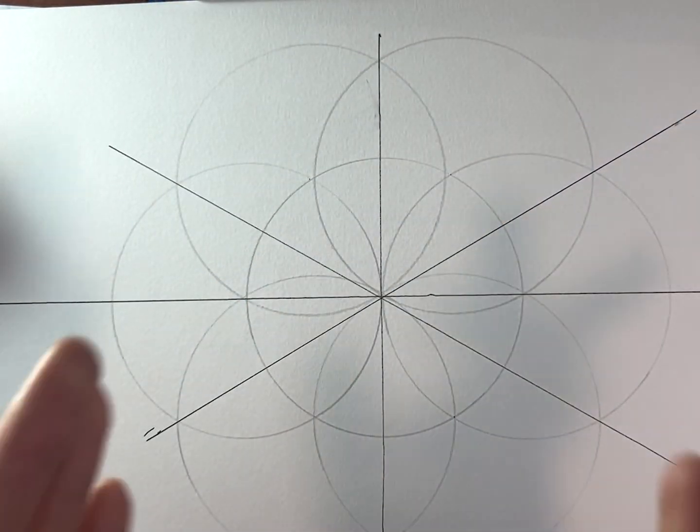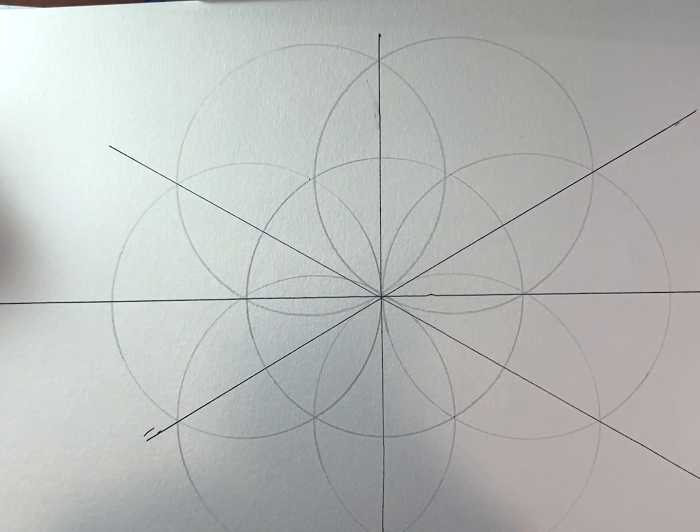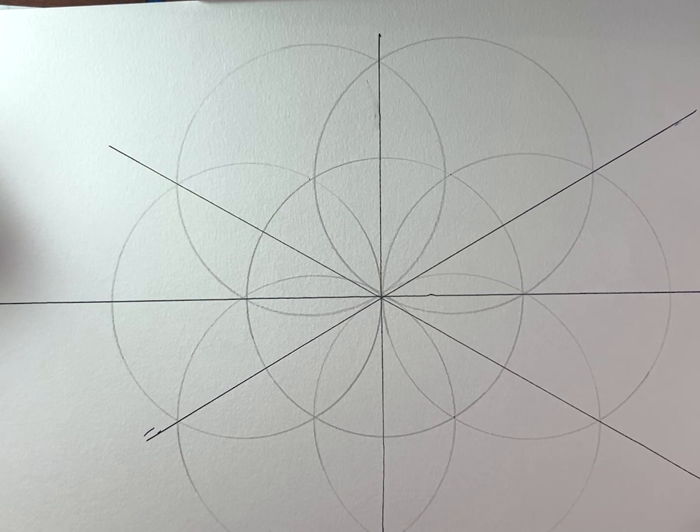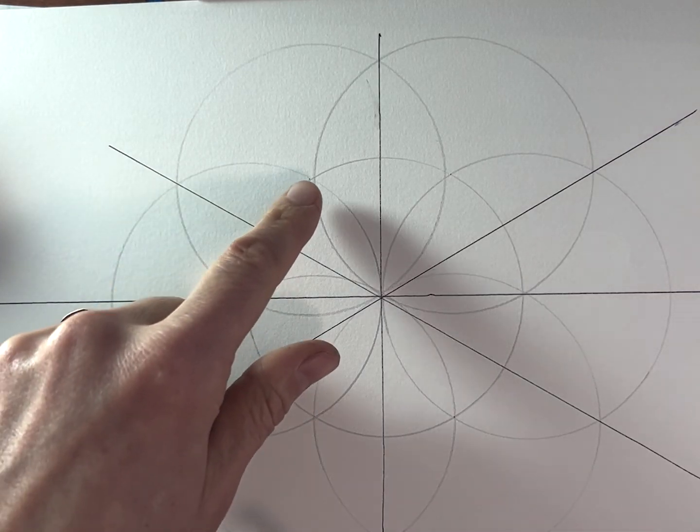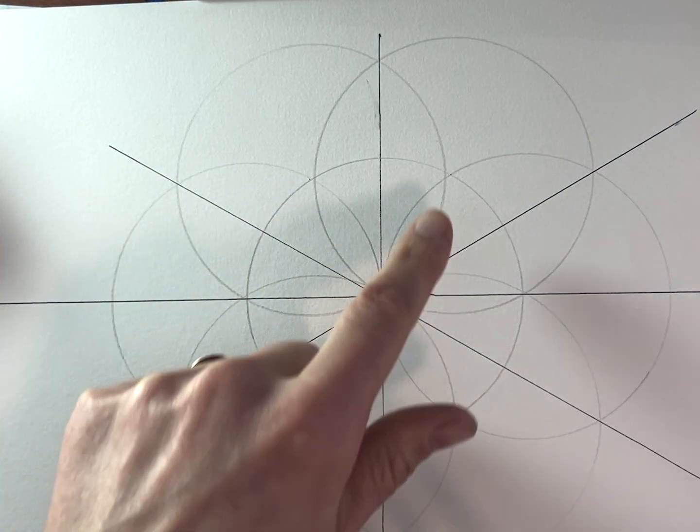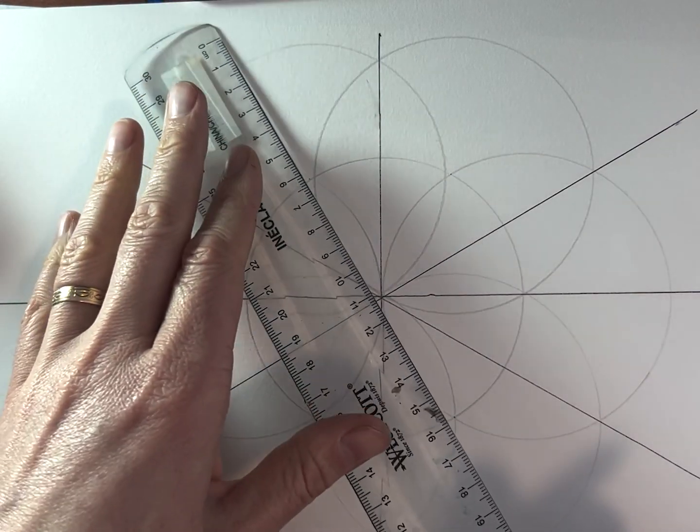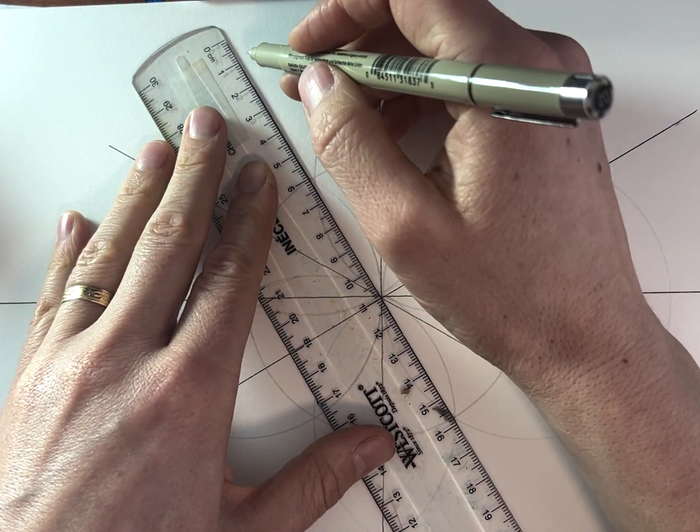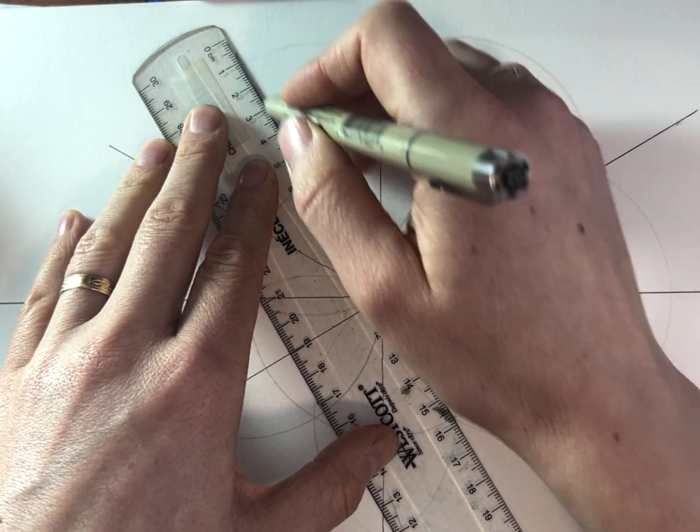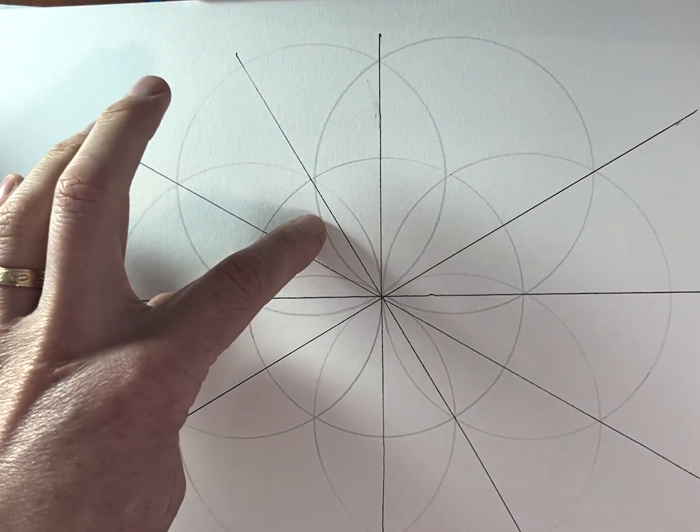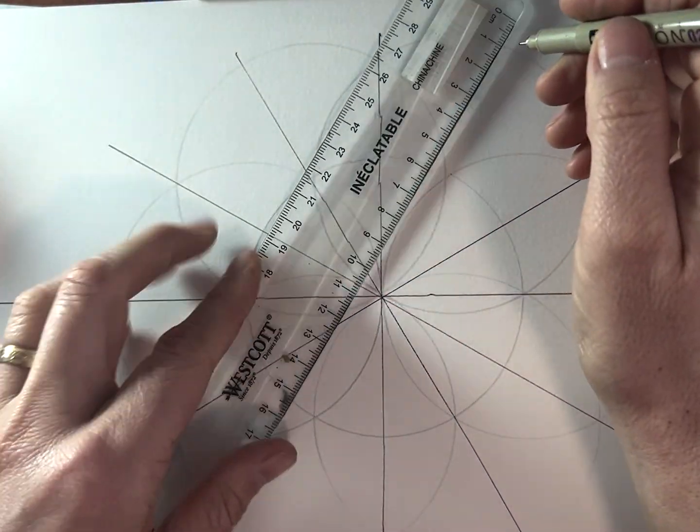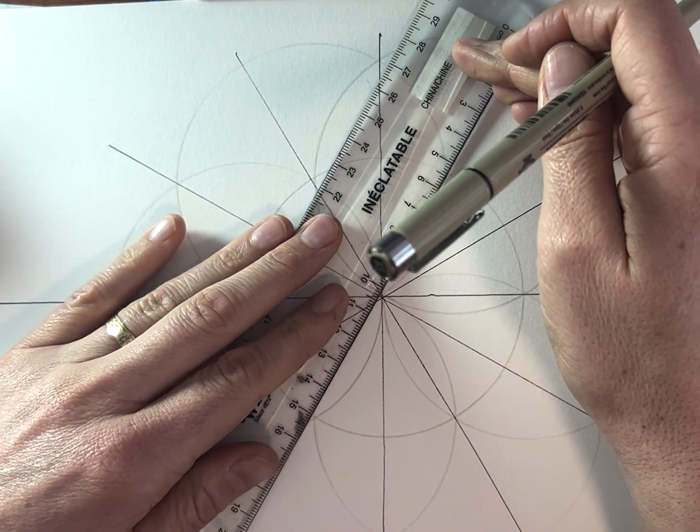Here we go. Now we're going to make a hexagon. Oh, first we have to do more lines across these petals. Here. So we're dividing the circle in 12.